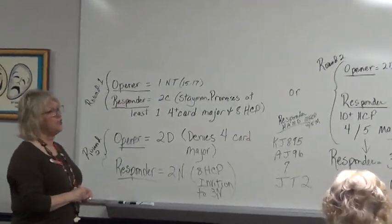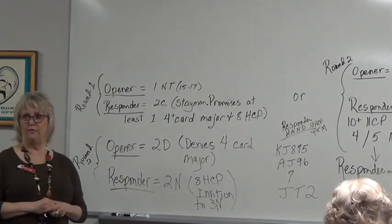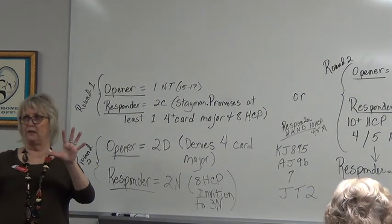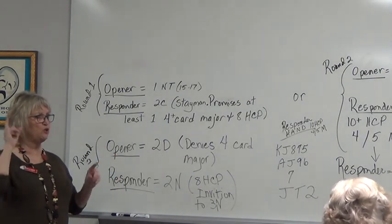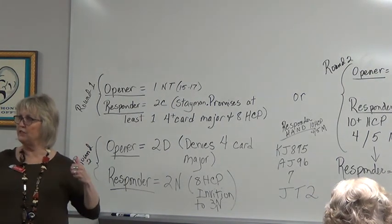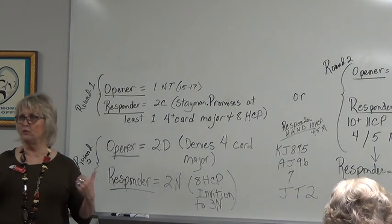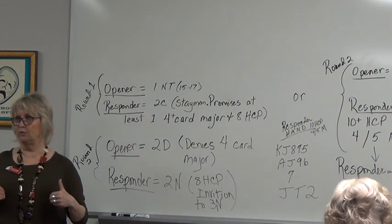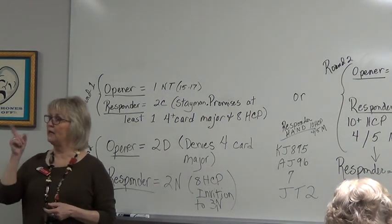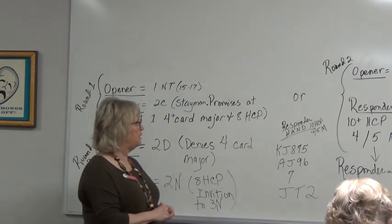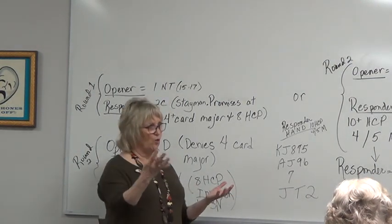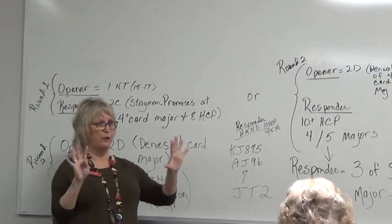Now, let's just say that instead of eight high card points, the responder owns at least ten high card points. He knows when his partner opens one no trump that they belong in a game. They have enough points to go to game. Fifteen plus ten is 25. The responder knows at the get-go they belong in a game. If they get two diamonds, they should just say three no and they're done.